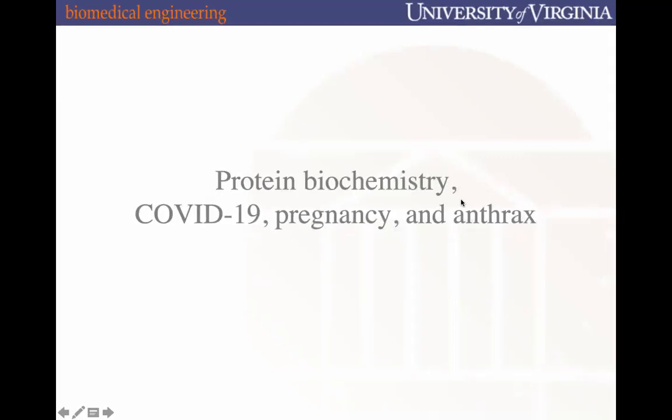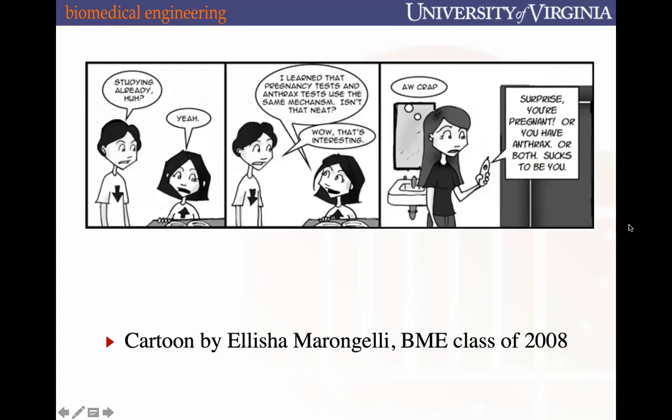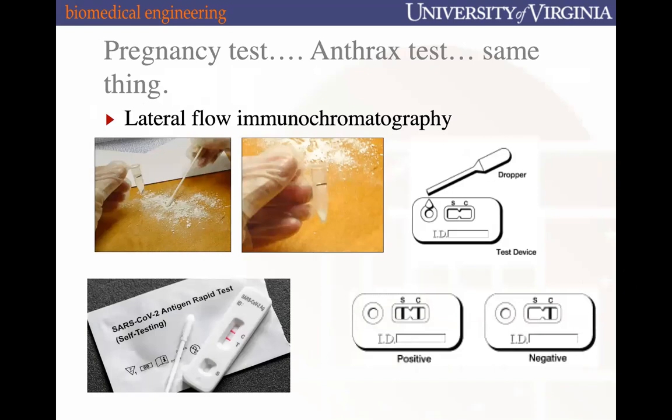There is an alum who was inspired by this lecture and created an illustration about studying this material and learning that pregnancy tests and anthrax tests use the same mechanism — which often leads to taking the test and not being able to tell if you have anthrax, you're pregnant, or perhaps both. Thankfully, the tests are actually more accurate than that. Pregnancy tests, anthrax tests, and more recent COVID-19 rapid antigen tests all use the same thing: it's called lateral flow immunochromatography.